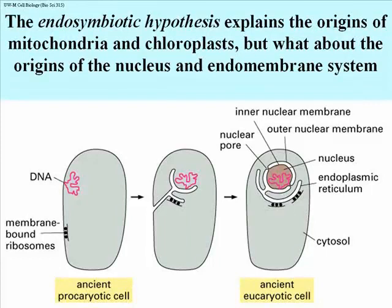This illustration from the textbook suggests what might have been the origin of the intracellular membranes — specifically the endomembrane system, which includes the nucleus. We have on the left a prokaryotic cell with its DNA. The DNA of bacteria is not free-floating in the cytoplasm but is actually attached at one point to the cell membrane. Bacteria also have ribosomes translating messenger RNAs into polypeptides that end up outside the cell as secreted proteins, and these ribosomes are attached to the cell membrane.